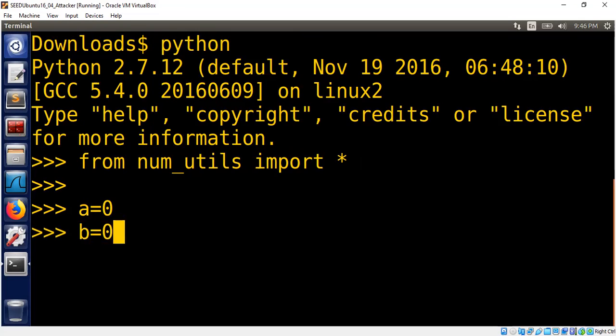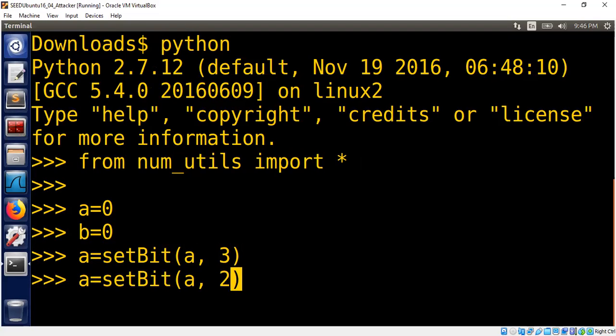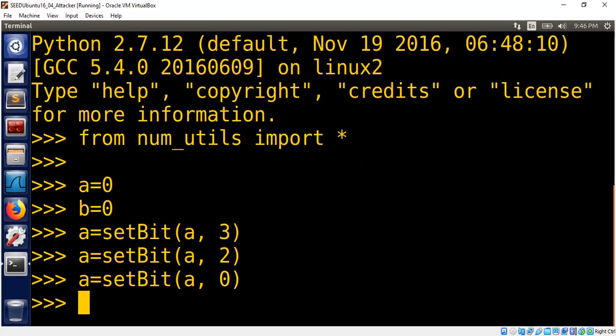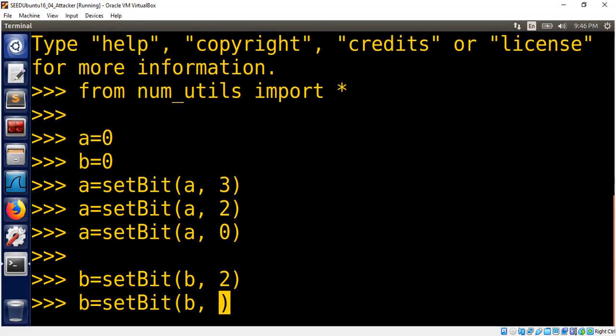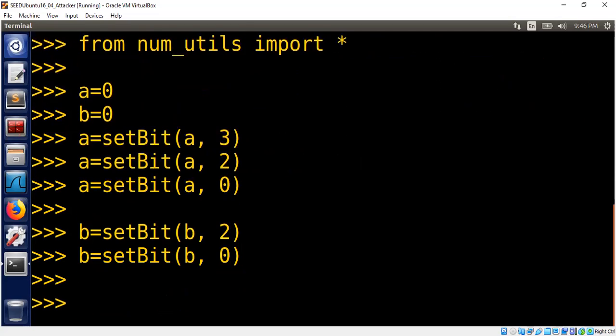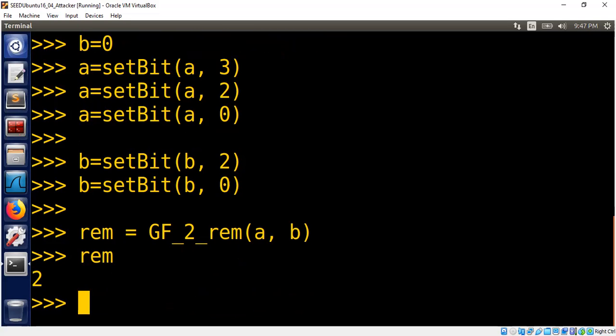And now we can quickly do the demo of this code. So I'm going to create polynomial A and the polynomial B. Remember A is x³ + x² + 1. That means I need to set bit third position, second position, and zeroth position. That means x³ + x² + 1. This is A. And B similarly is second position and zeroth position, because it's just x² + 1. And now our goal is to compute the remainder in Galois field, GF(2) rem of A comma B. This is nice. You get 2. 2 is nothing but 1, 0 in binary, which is how we represent the x. So we confirm now that our algorithm is working, at least for the example that I've shown you.